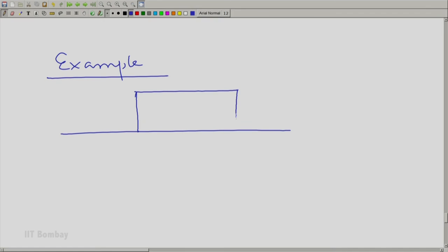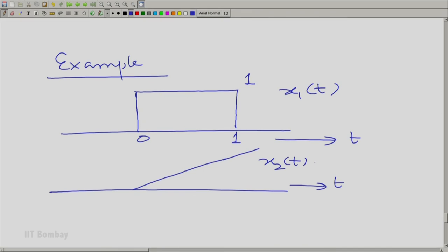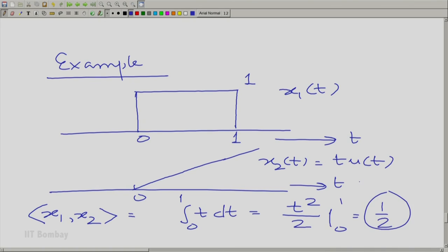Let us define x1(t) to be 1 between 0 and 1, and x2(t) to be a ramp between 0 and 1. So x2(t) is equal to t times u(t). We can calculate the dot product x1 x2, which is essentially the integral from 0 to 1 t dt, and that is an easy integral to calculate, t squared by 2 from 0 to 1, and that is just half. This is the dot product of the two signals. We have now understood how to calculate dot products of continuous time signals.